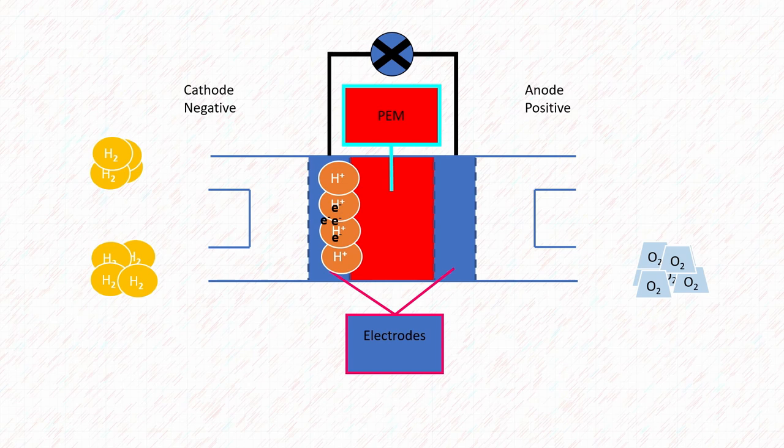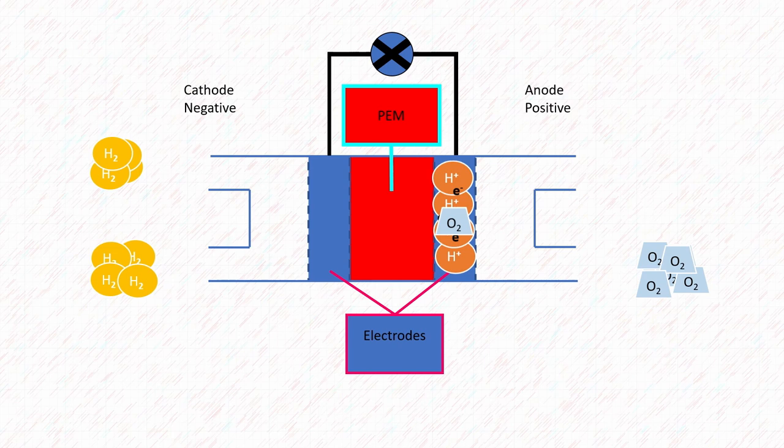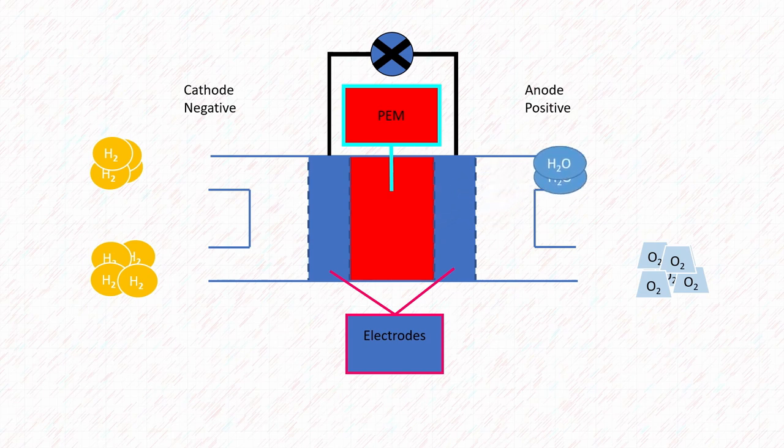The electrons travel around the circuit lighting up the bulb or powering a fan and the hydrogen crosses this polymer electrolyte membrane which is again a topic for another video. The hydrogen ions react with the electrons and oxygen to produce water which escapes from the anode side of the fuel cell.